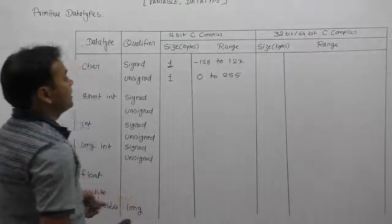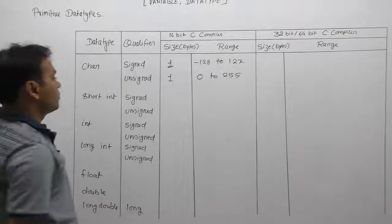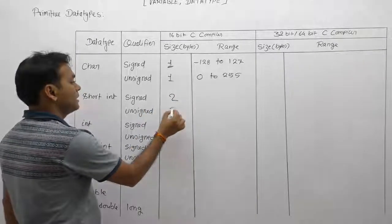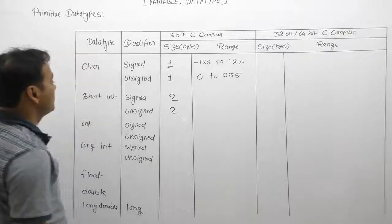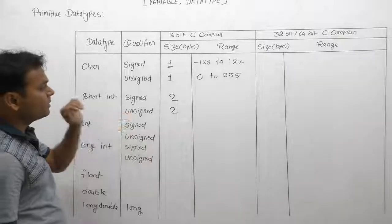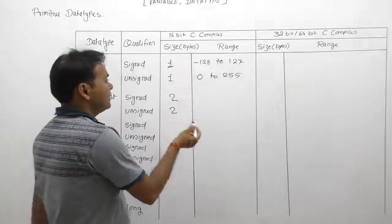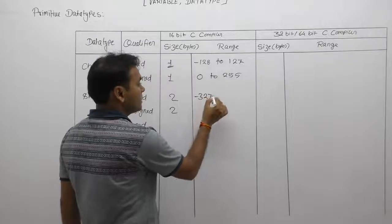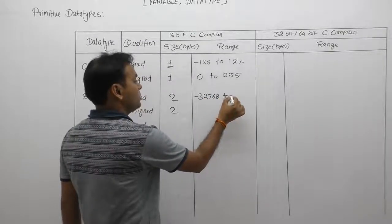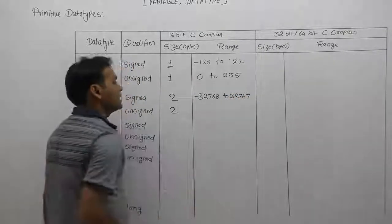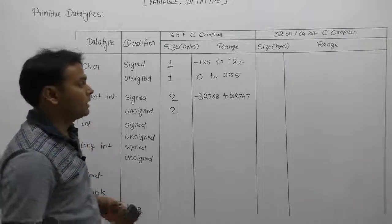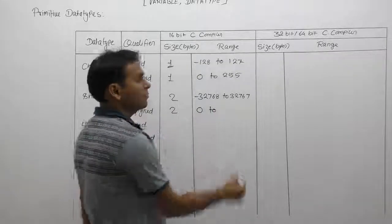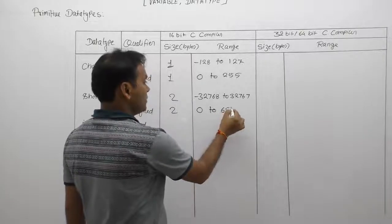For short int, the size is fixed at always 2 bytes with respect to both signed short int and unsigned short int. For signed short int, the minimum range is minus 32768 and the maximum is plus 32767. For unsigned short int, the minimum range is 0 and the maximum range is 65535.